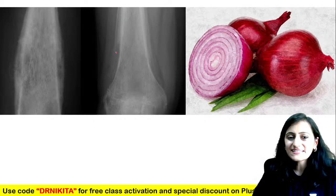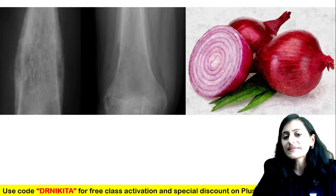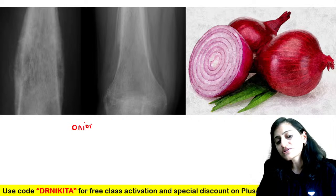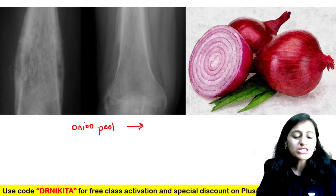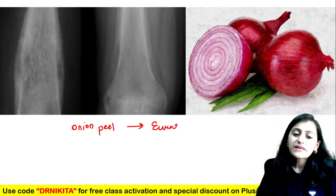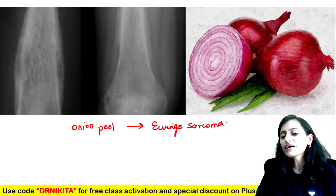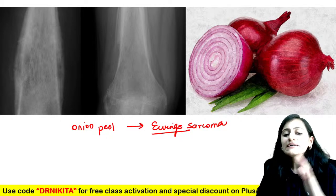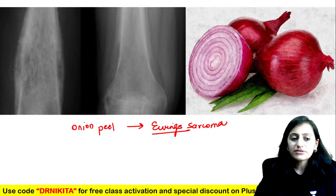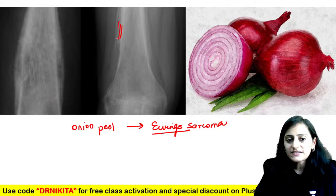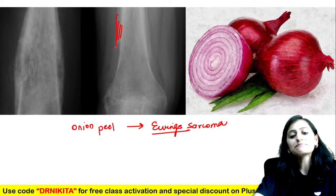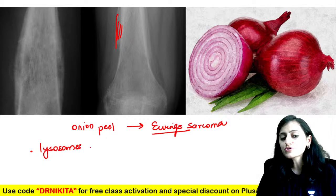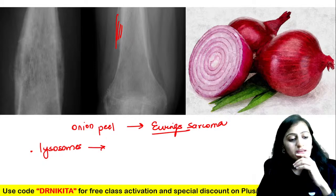Look at the multiple lines like an onion peel — this is the onion peel periosteal reaction, seen with Ewing's sarcoma, though not specific for it. It indicates an aggressive lesion. The onion skin — multiple lines — is associated with Ewing's sarcoma. Where do we see onion skin appearance of lysosomes? Recent KBMD covered this.